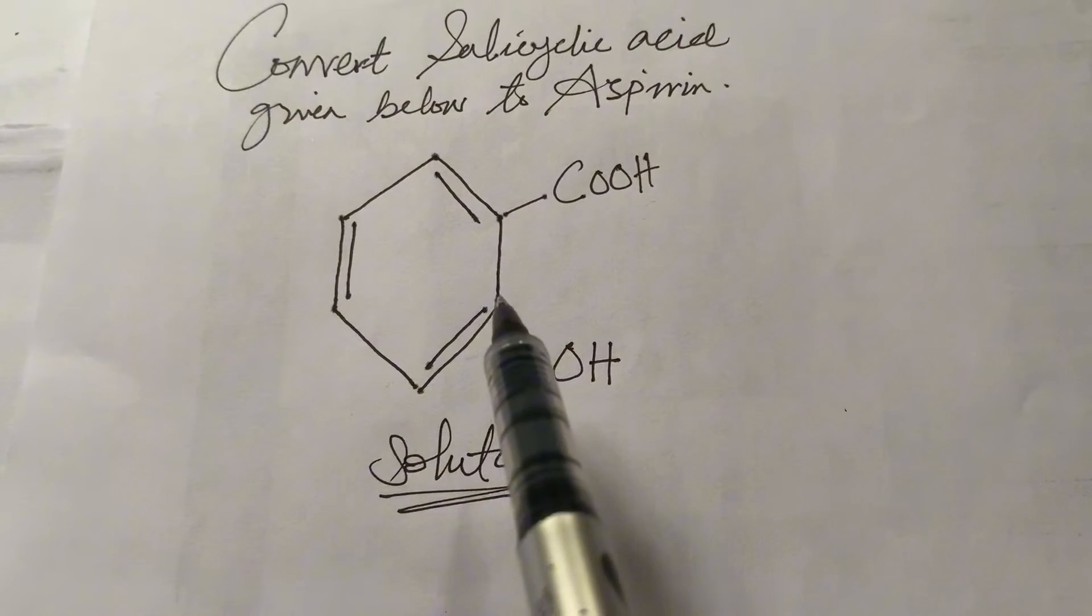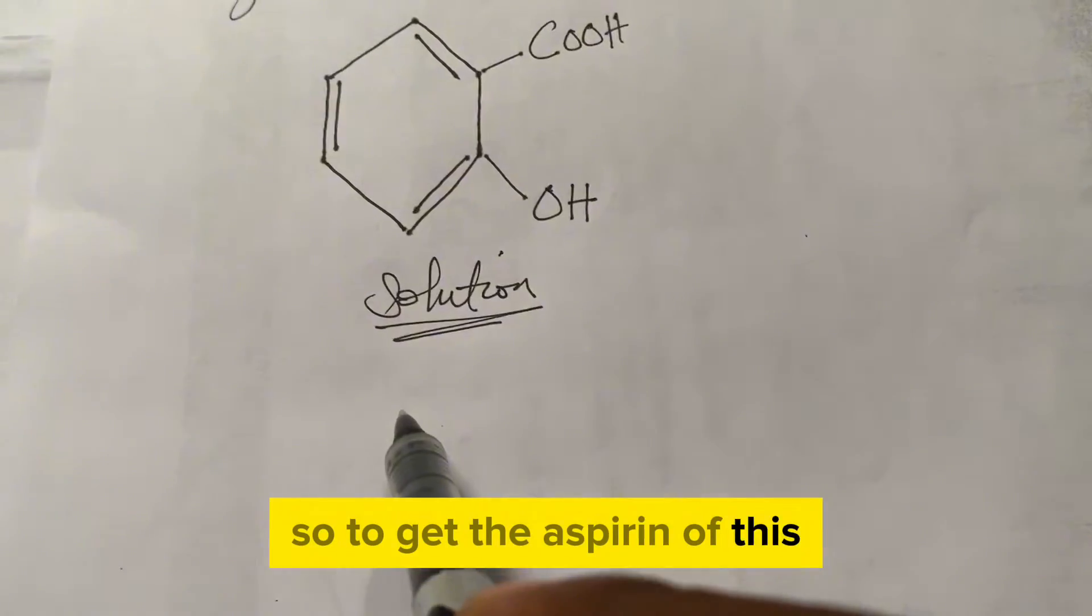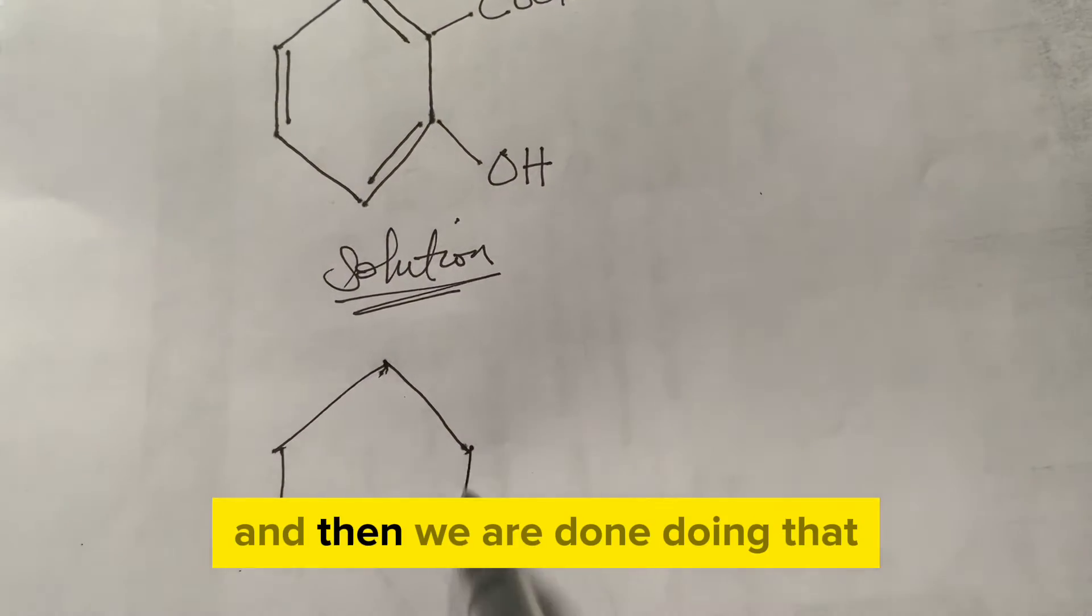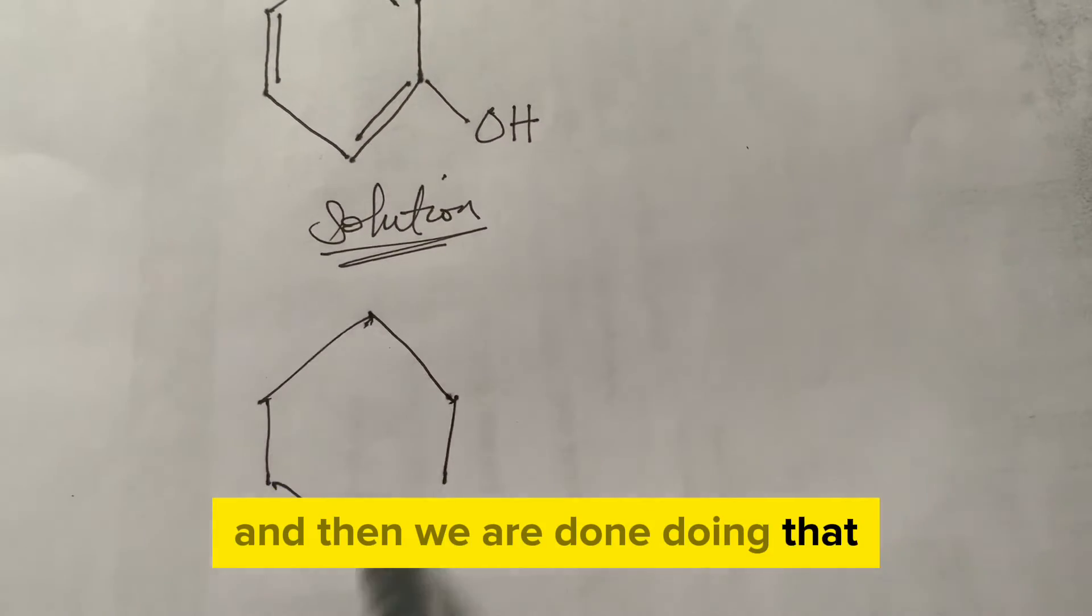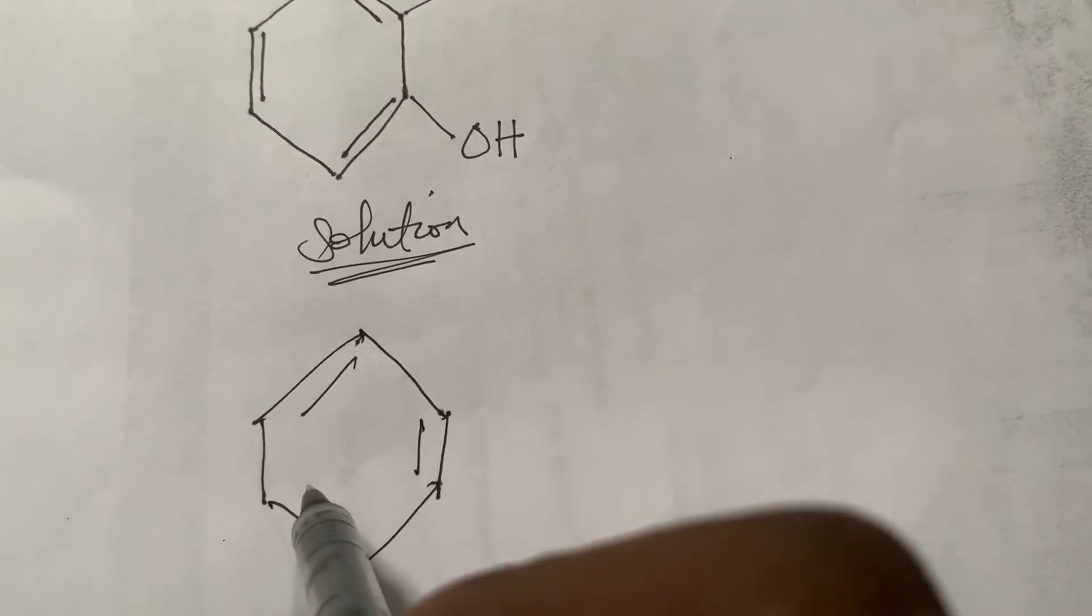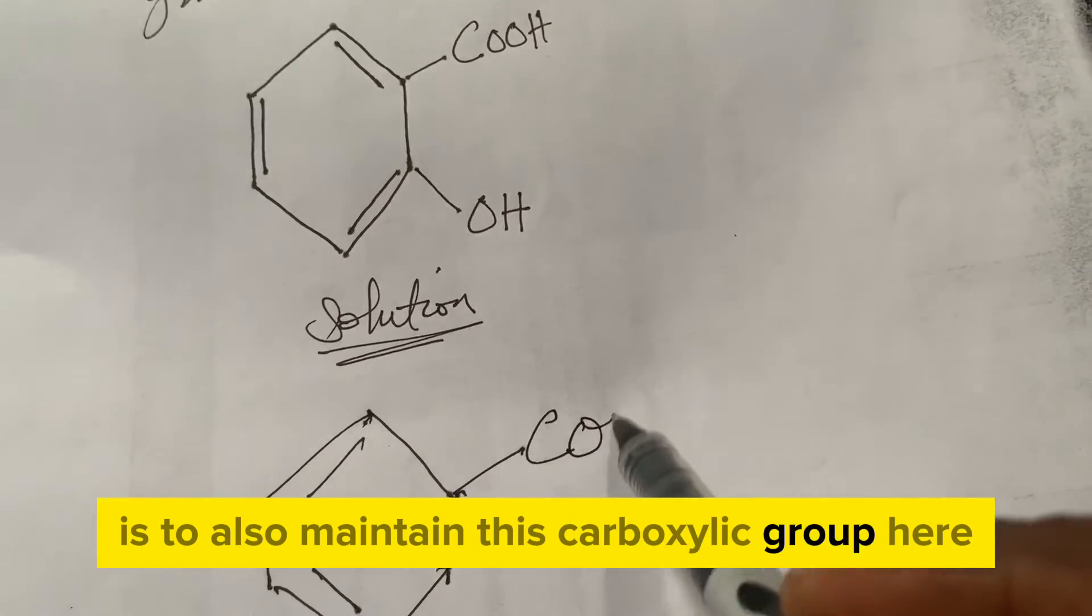To get the aspirin, we just need to draw the same benzene structure. When you are done doing that, the next thing you need to do is to also maintain this carboxylic structure here.